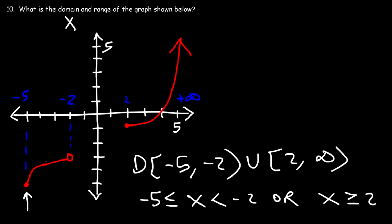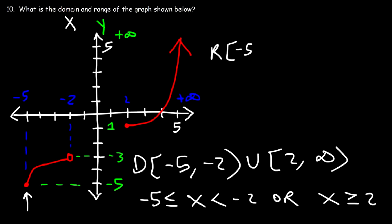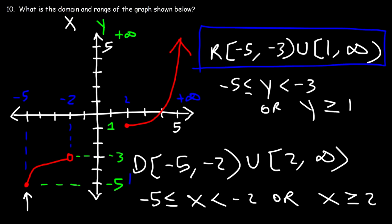For the range, which is associated with the y-values, the lowest y-value is −5 and the highest for the first part is −3. Then it starts back up at 1 and goes to positive infinity. So the range in interval notation is [−5, −3] ∪ [1, ∞). As an inequality: −5 ≤ y < −3, or y ≥ 1. That's how you write the domain and range using inequalities and interval notation.